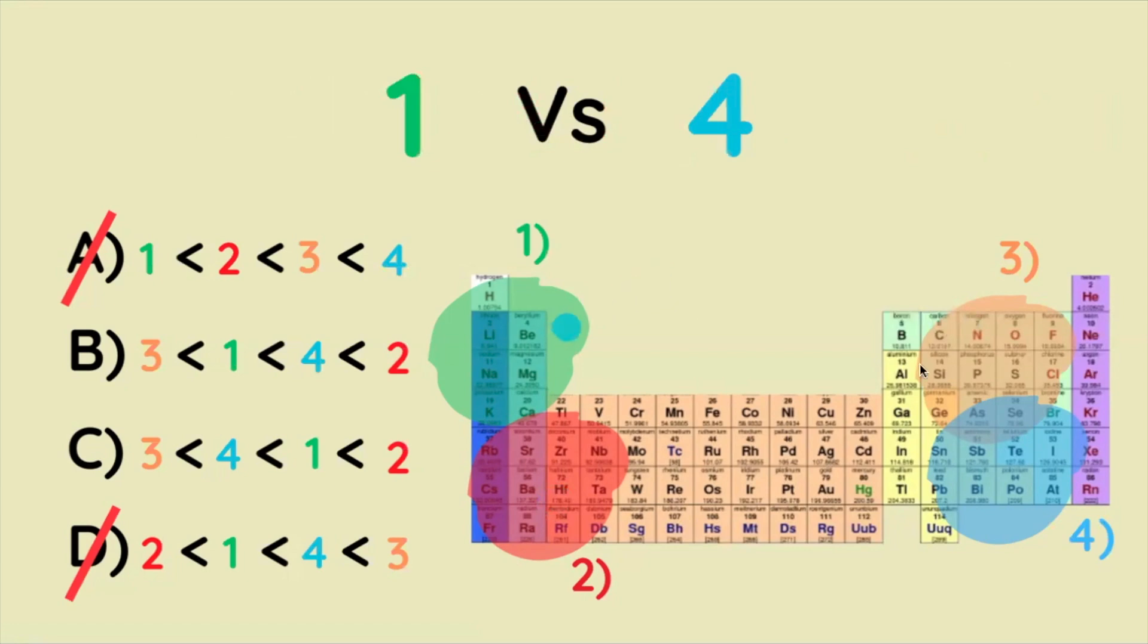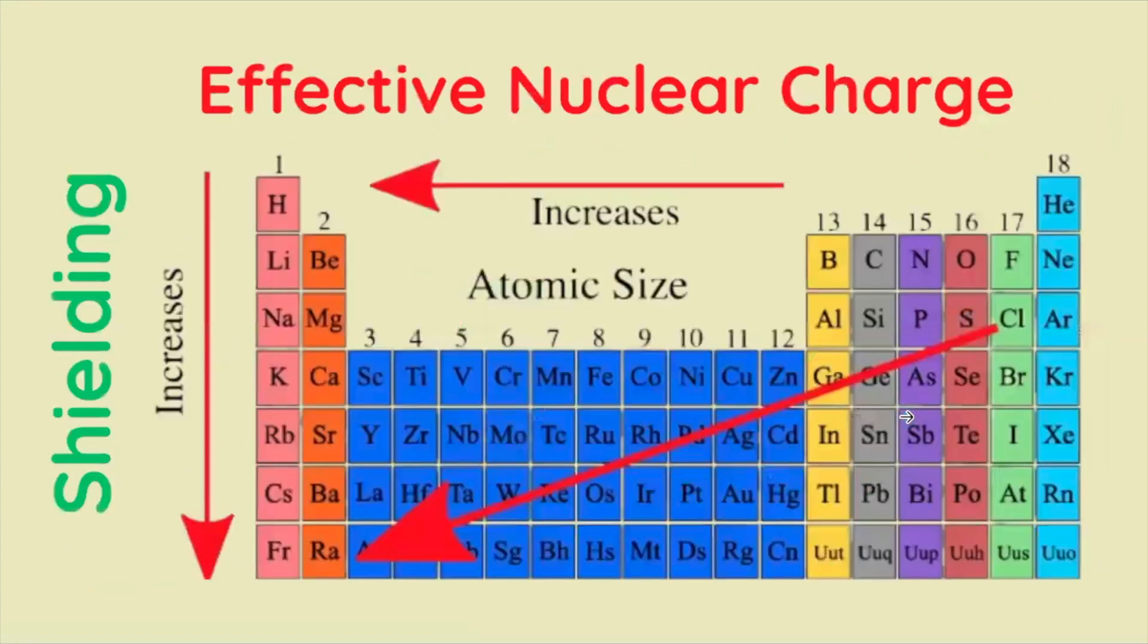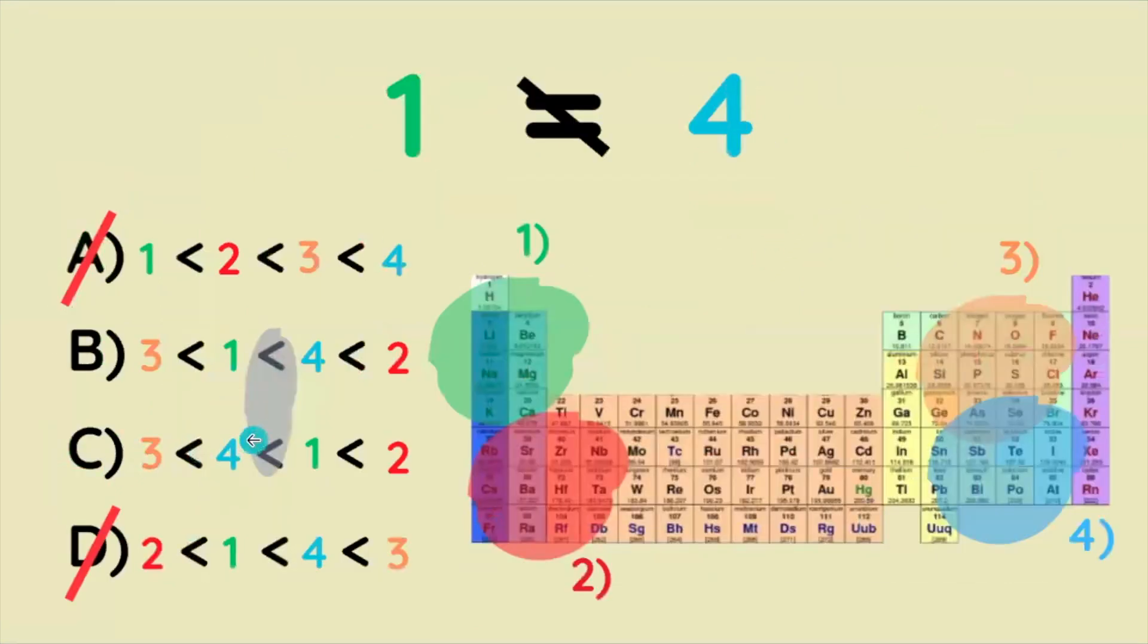But what about the top left and the bottom right regions? Which one is bigger and which one is smaller? So really that turns to the question of what factor is more powerful in influencing atomic radius trend? We know that ENC and shielding are not equally strong because that means we would have a 1 equals 4 option for the answer choices.